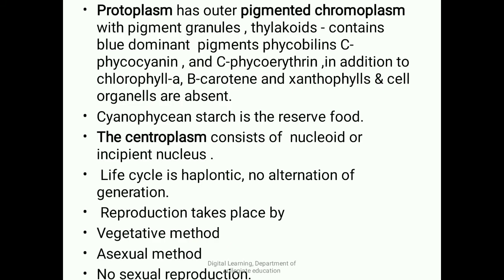The outer pigmented chromoplasm consists of pigment granules; the thylakoids contain the dominant blue pigments — c-phycocyanin and c-phycoerythrin — in addition to chlorophyll A, beta-carotene, and xanthophyll. Cell organelles are completely absent. Reserve food material is cyanophycean starch. The centroplasm consists of a nucleoid or incipient nucleus, which is hyaline; only genetic material in the form of DNA is present. Nuclear envelope and nucleolus are absent, making this an incipient nucleus.